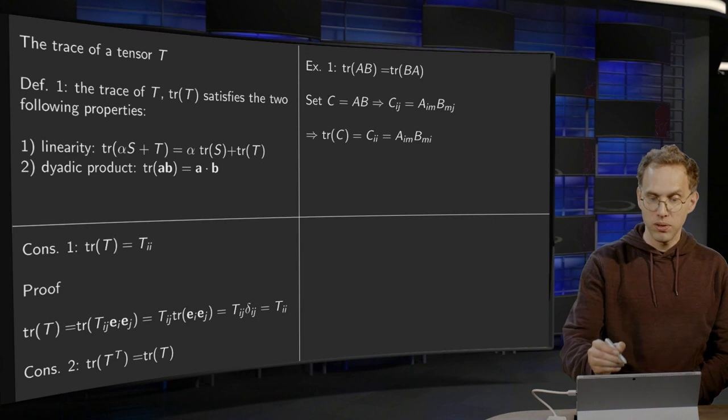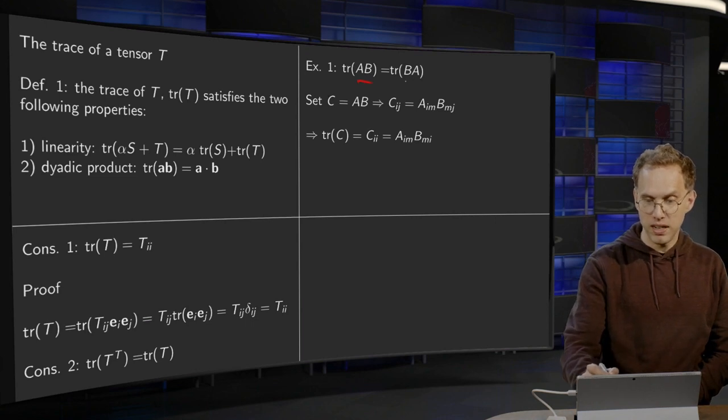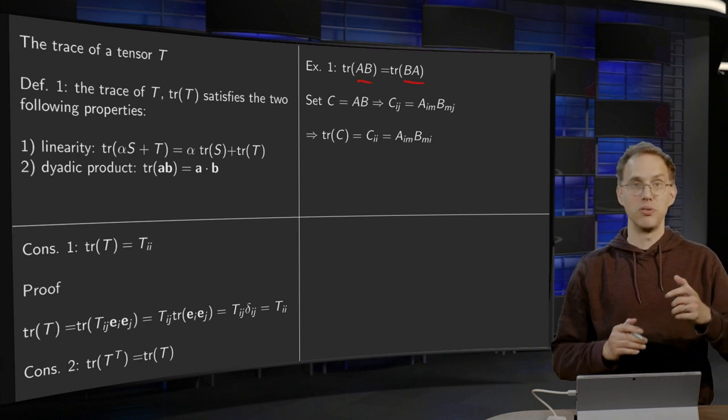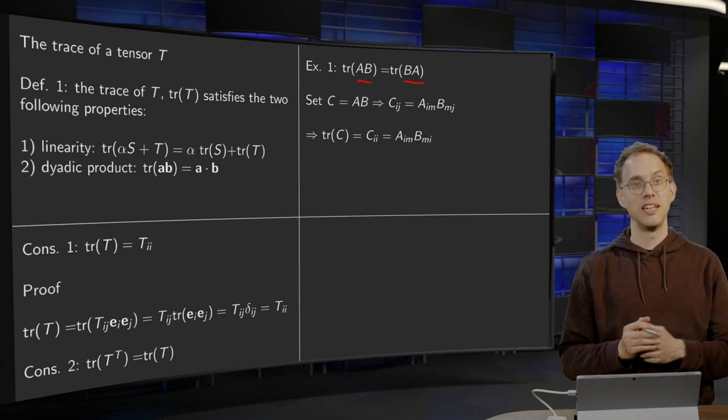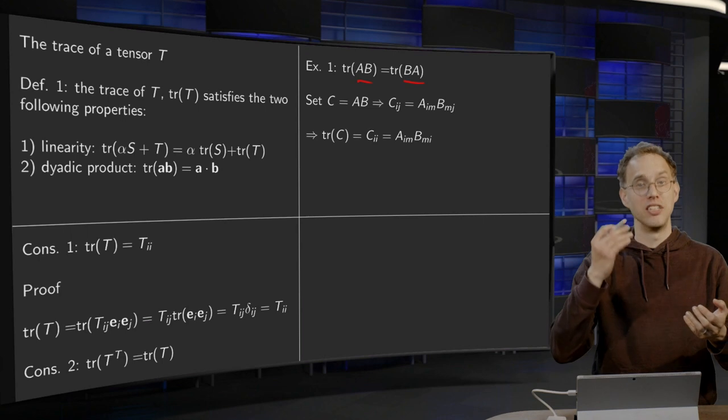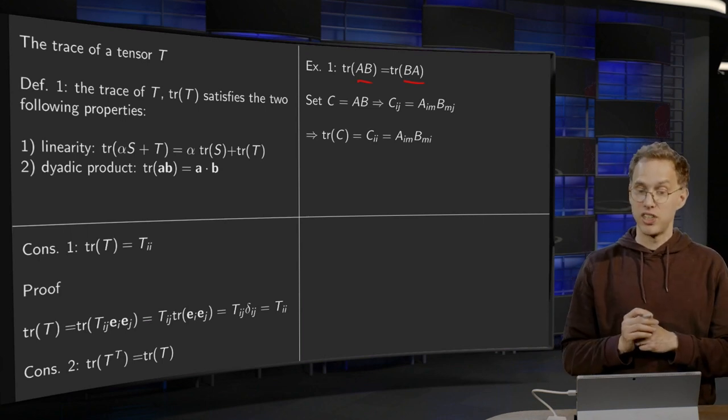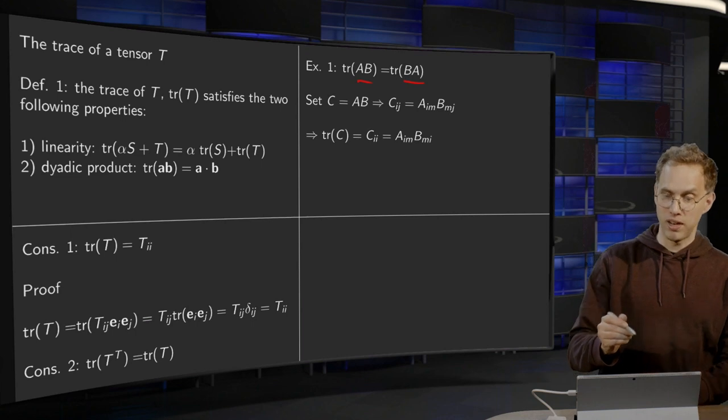Then something special: trace of A times B equals the trace of B times A. Now this is not so trivial, because you know for matrix multiplication that A times B is in general not the same as B times A. However, the traces are the same. We'll show that in this example.